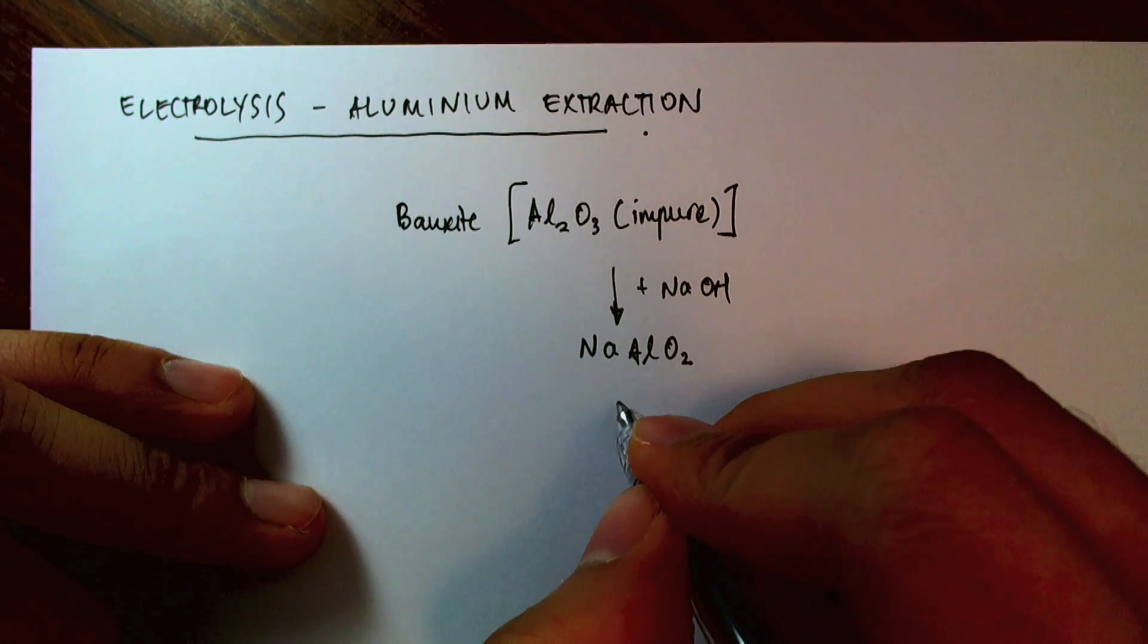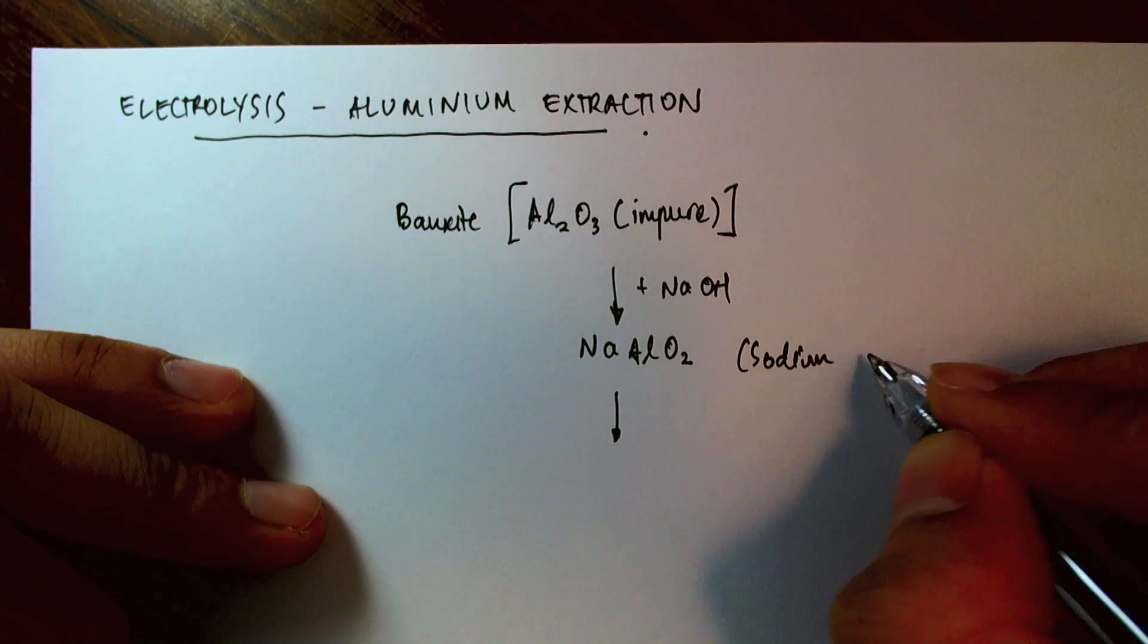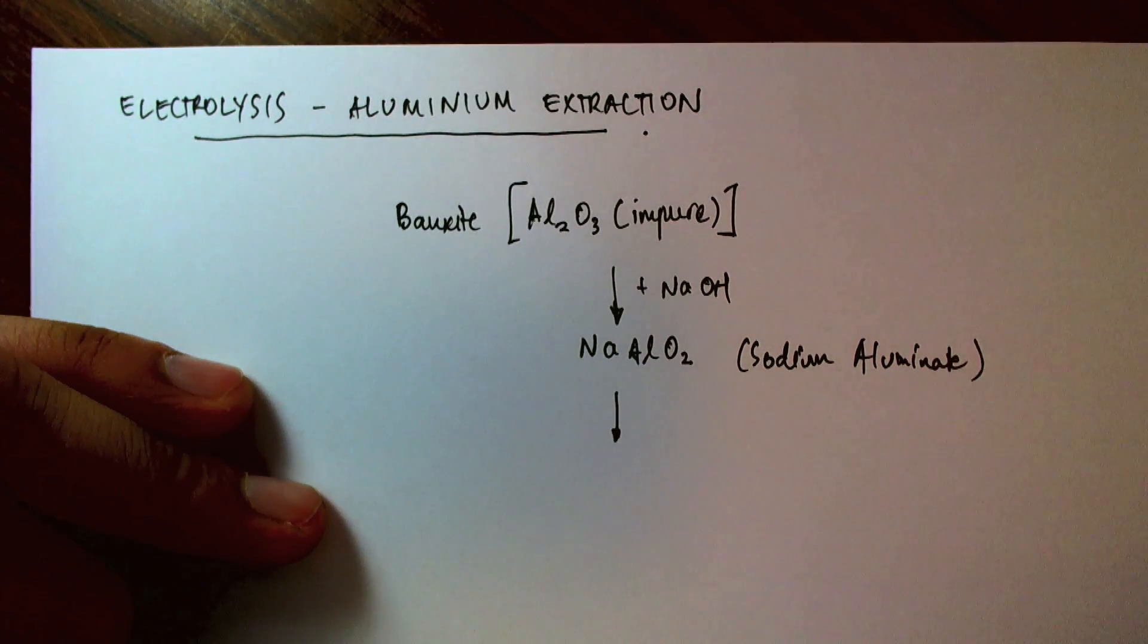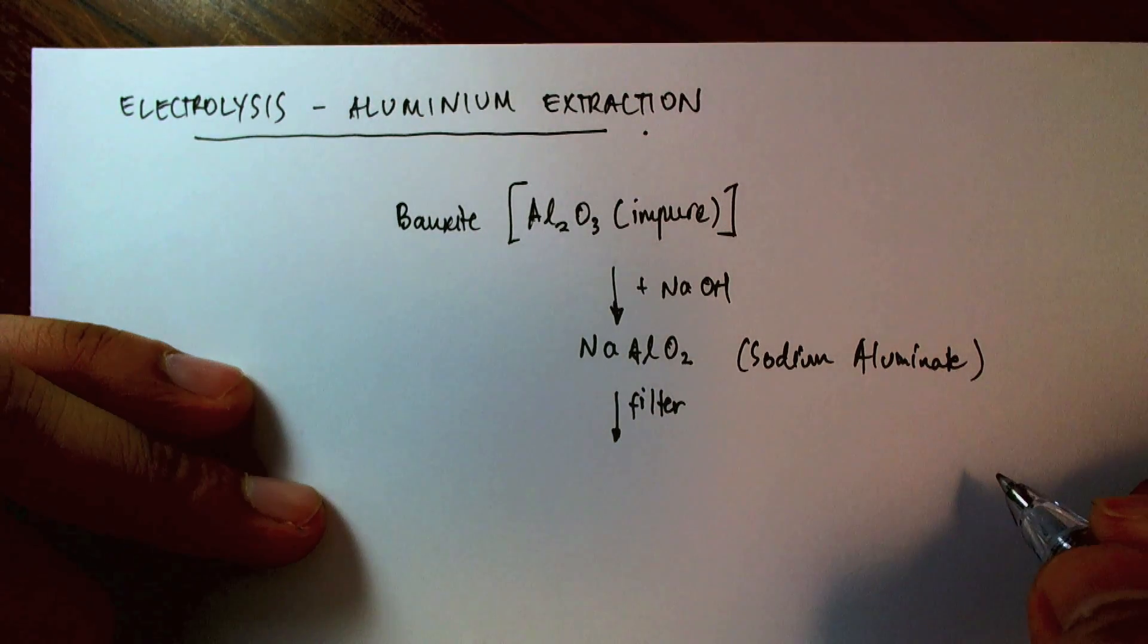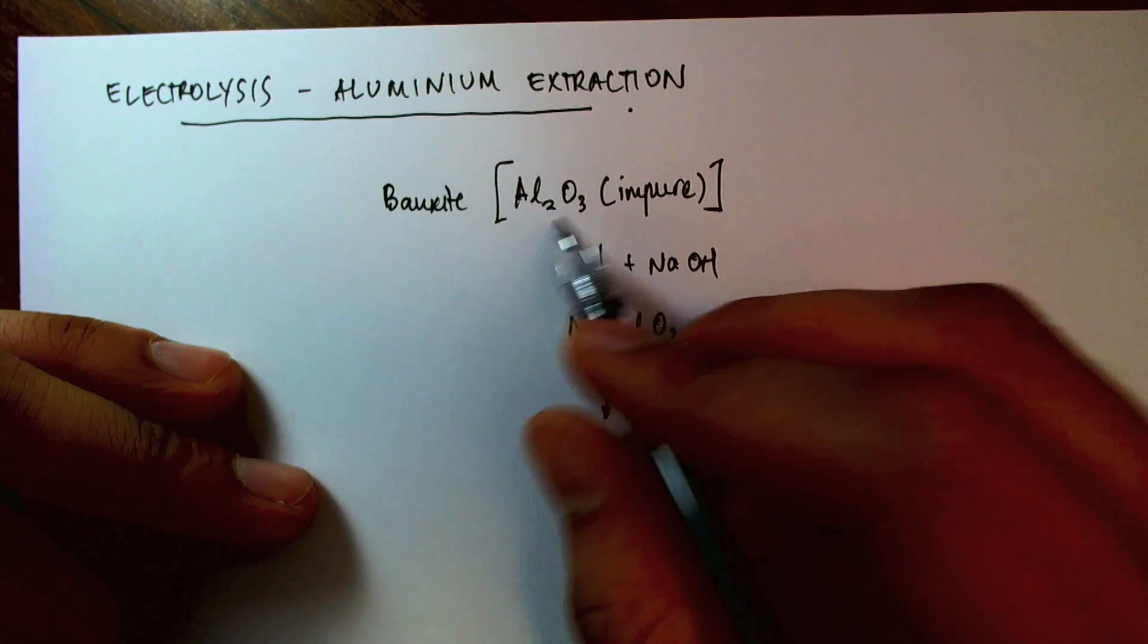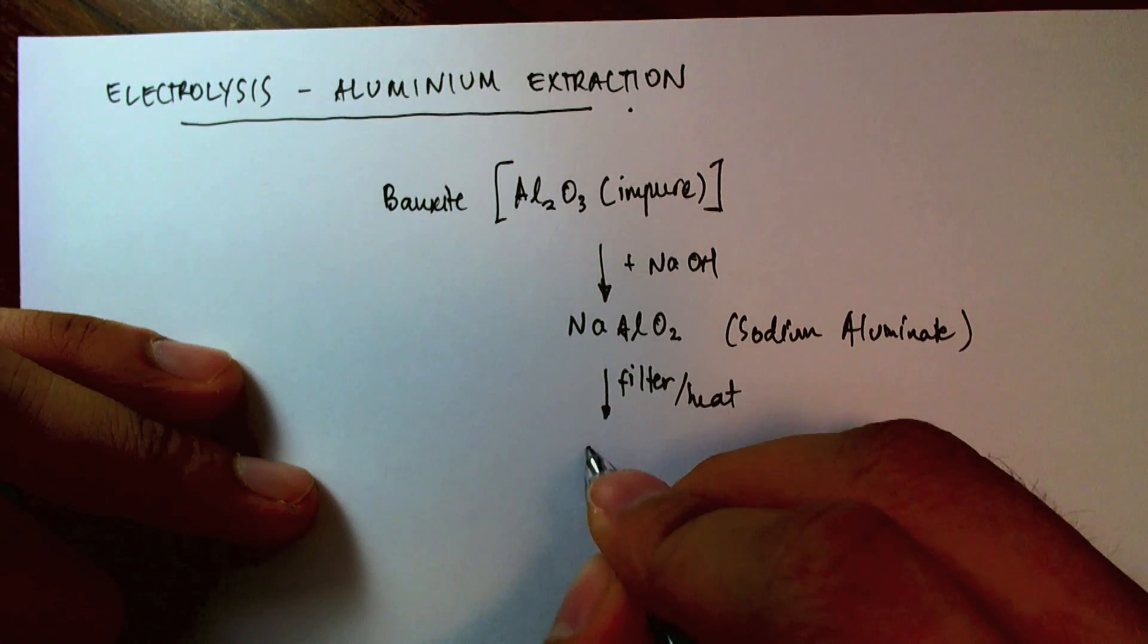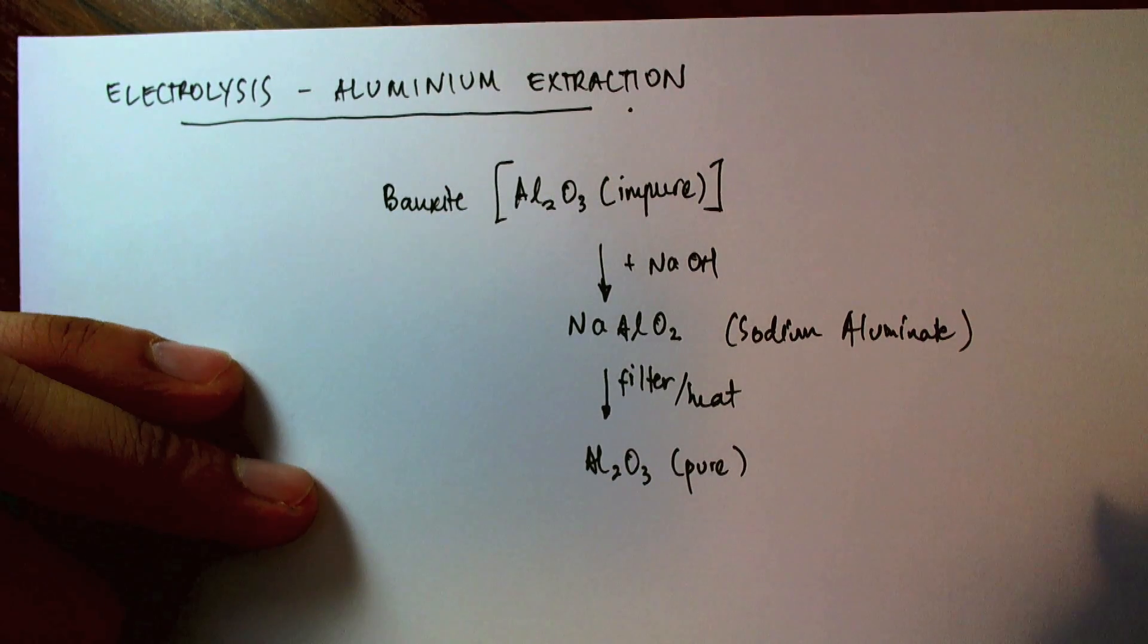And the sodium aluminate will then be filtered to get rid of all the impurities, because the impurities will not dissolve in sodium hydroxide while the bauxite will. And you filter it, you heat it, and you end up with aluminum oxide, which is pure.